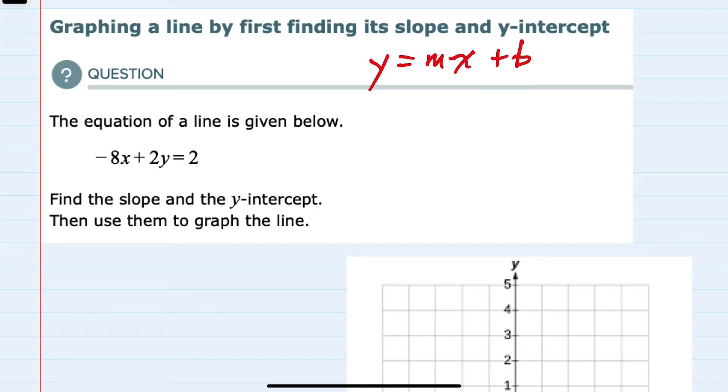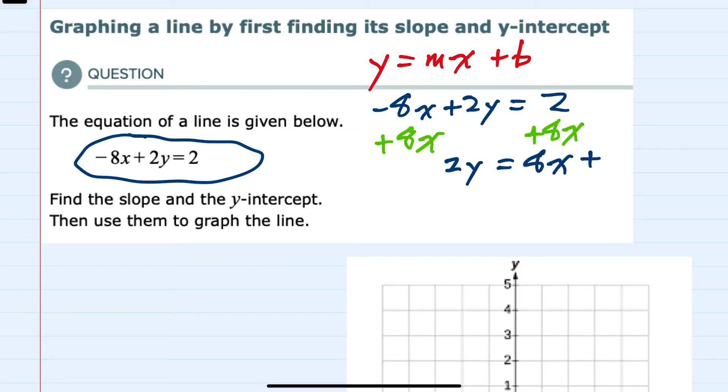To do so, I'll take the equation they gave and solve it for y by getting y by itself. First, I'll add the 8x over to the right-hand side. That gives me 2y equals, writing the x term first, 8x + 2.